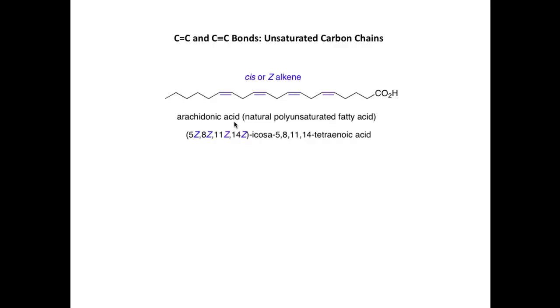Finally, we're going to look at drawing compounds with unsaturated carbon chains, which contain carbon-carbon double and carbon-carbon triple bonds. The first example is arachidonic acid, a naturally occurring polyunsaturated fatty acid, which has four alkenes with the cis or Z configuration. When you have a saturated carbon chain, we have a zigzag arrangement of carbon atoms giving an idea of the approximate shape of the molecule. But when we introduce cis or Z alkenes, we get kinks within the carbon chain — and it's important to convey the shape of the molecule when drawing organic structures.